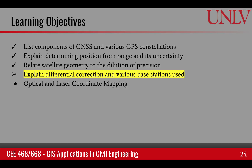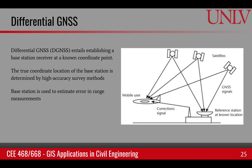The next learning objective is about differential correction and how it is performed. Differential GNSS, or differential global navigation satellite system, is basically a mechanism of correcting errors in position. It entails establishing a base station where we know the position accurately. The true coordinates of the base station are used to determine the accuracy of the satellite-broadcasted signal and estimated position, and once that error is estimated, it can be used to perform a correction for all other measurements.